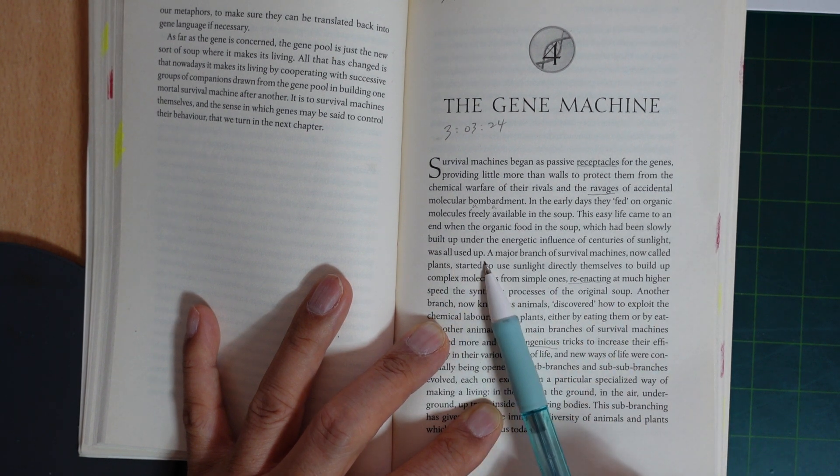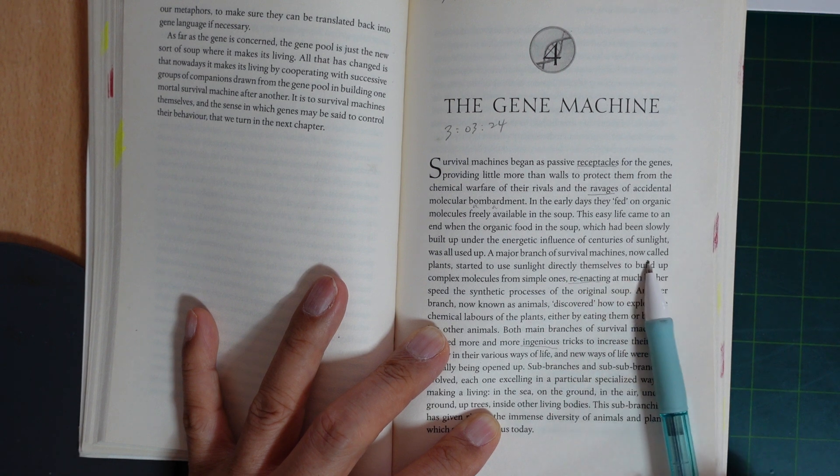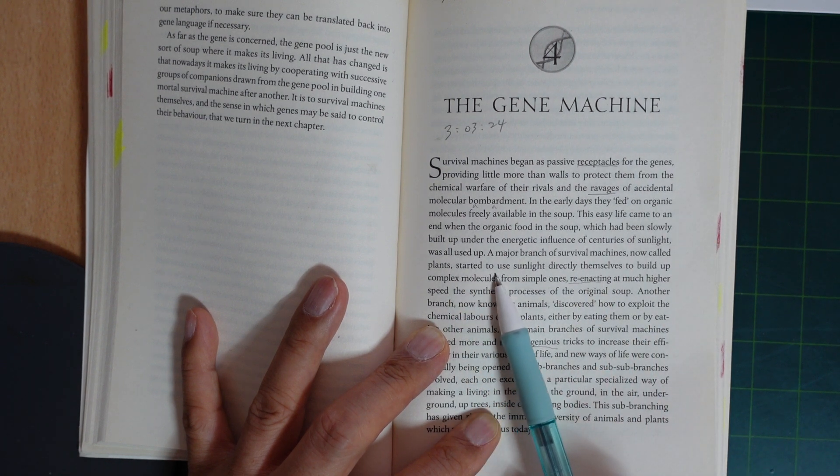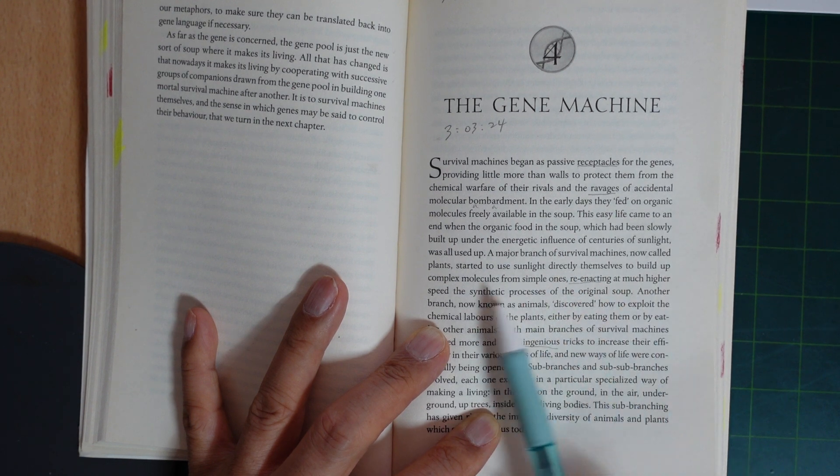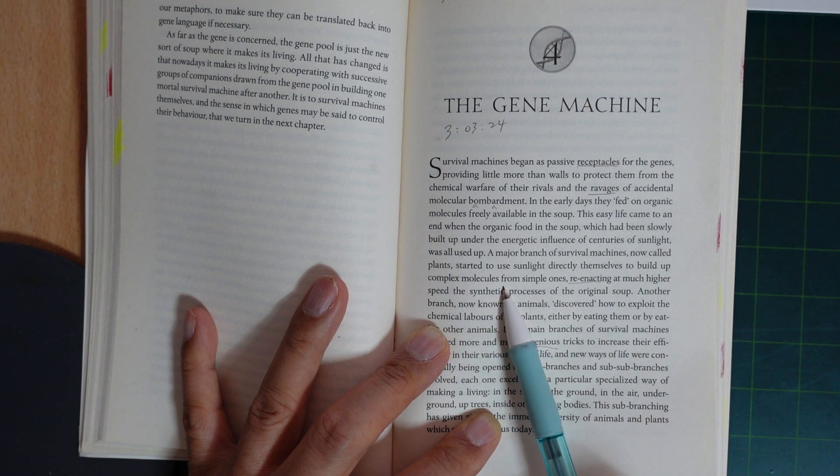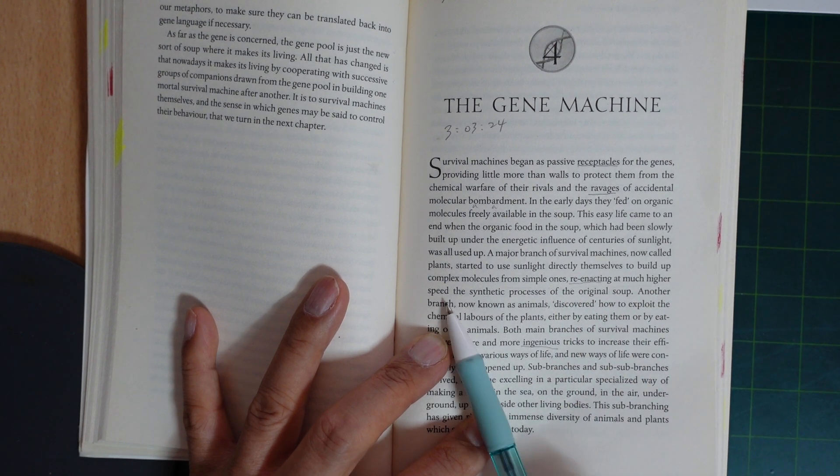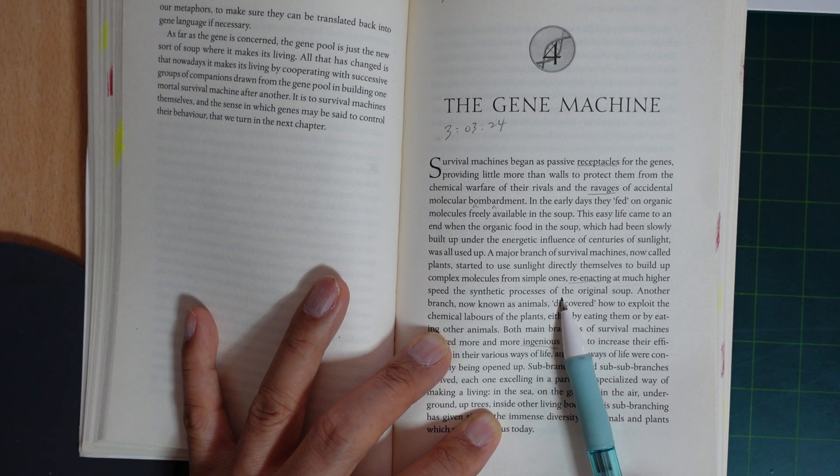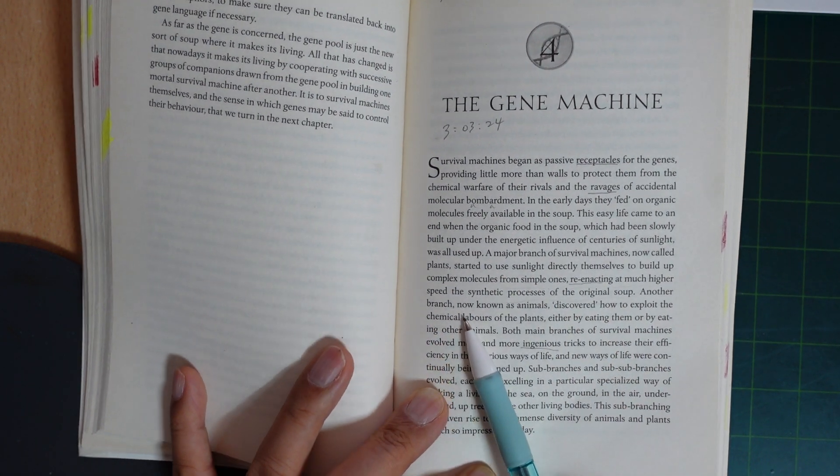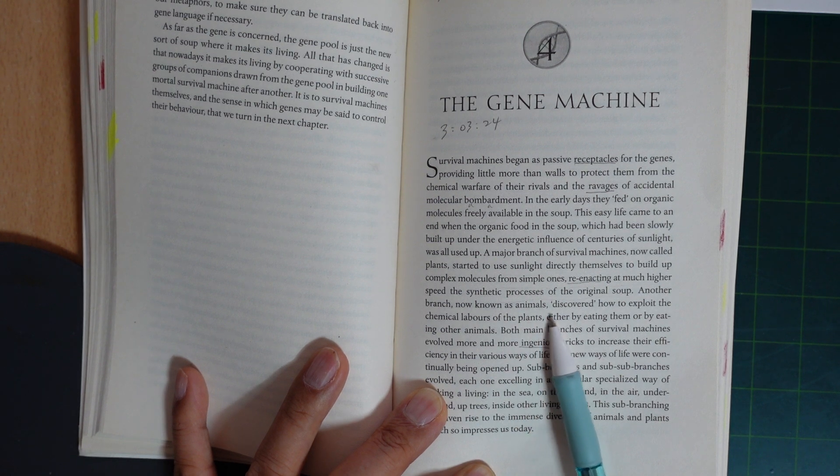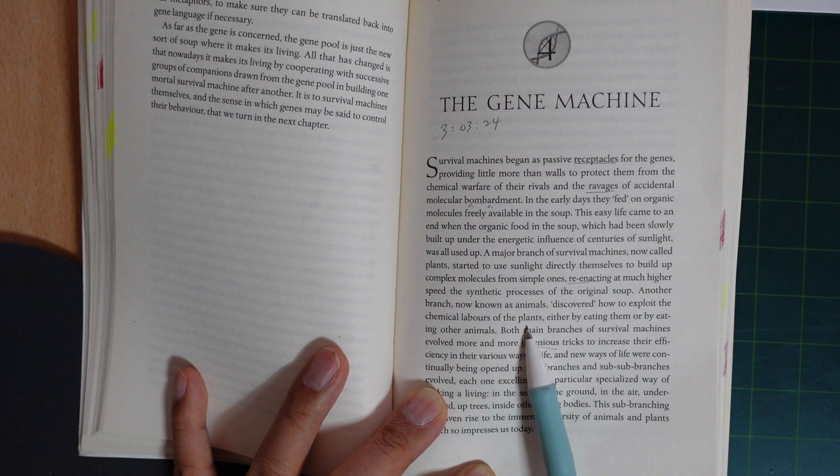A major branch of survival machines, now called plants, started to use sunlight directly themselves to build up complex molecules from simple ones, re-enacting at much greater speed the synthetic processes of the original soup. Another branch, now known as animals, discovered how to exploit the chemical labors of the plants, either by eating them or by eating other animals.